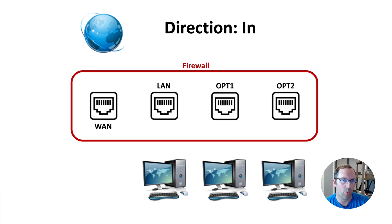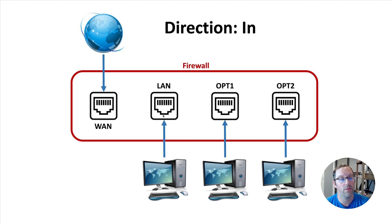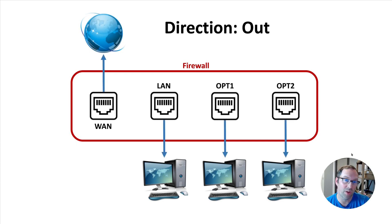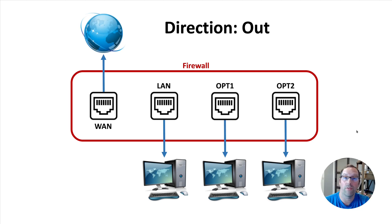I'm going to walk through what direction in means. This is where traffic is flowing into the interfaces — in through the firewall — this is the direction of in. Direction out is going to be pretty much the opposite; it's traffic coming out of the firewall. Let's see what happens when we analyze how traffic actually flows between networks, because this will make more sense for how direction differs from source and destination.